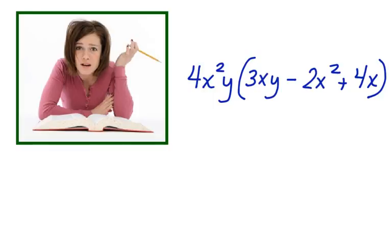This problem involves a monomial being multiplied by a polynomial. Jackie thinks it has something to do with the distributive property, but she's not quite sure. Do you remember the distributive property?